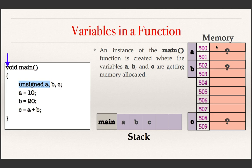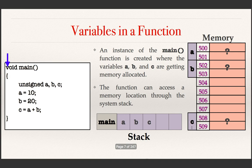I call these two bytes a location. Whenever I say location, I mean a consecutive sequence of bytes to store the value of a variable. So a requires two bytes and these two bytes are called the location for a, and the address of the location for a is 500. Similarly, b and c are getting locations allocated. The function can access a memory location for a through the stack — it goes to the stack and through the stack it goes to the location and accesses the memory.